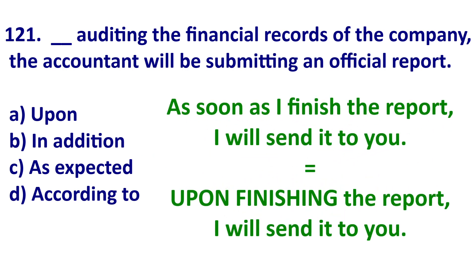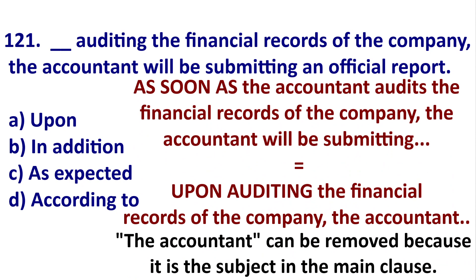The answer is A — 'upon.' Upon is a preposition meaning 'as,' 'as soon as,' 'when,' or 'just after.' Example: as soon as I finish the report, I will send it to you — or: upon finishing the report, I will send it to you. So in this question, we're saying: as soon as the accountant audits the financial records of the company, the accountant will submit an official report. We can shorten that by turning 'audit' into a gerund: upon auditing the financial records of the company, the accountant will be submitting an official report. The answer is A — upon.